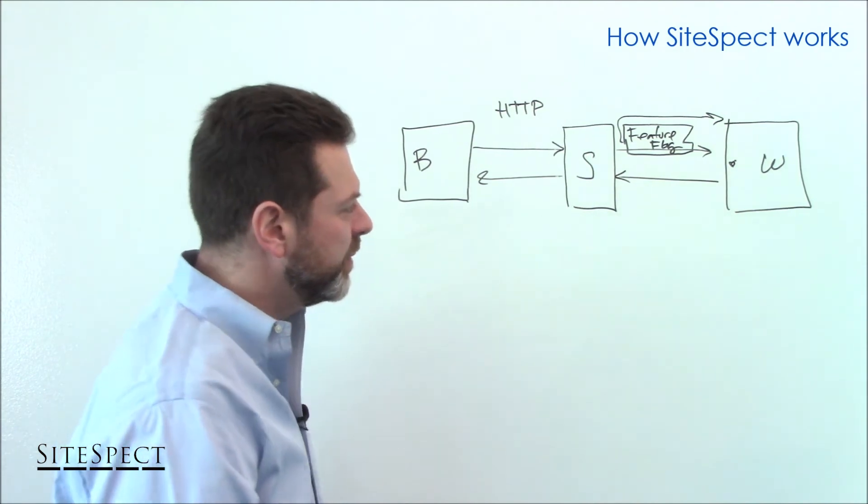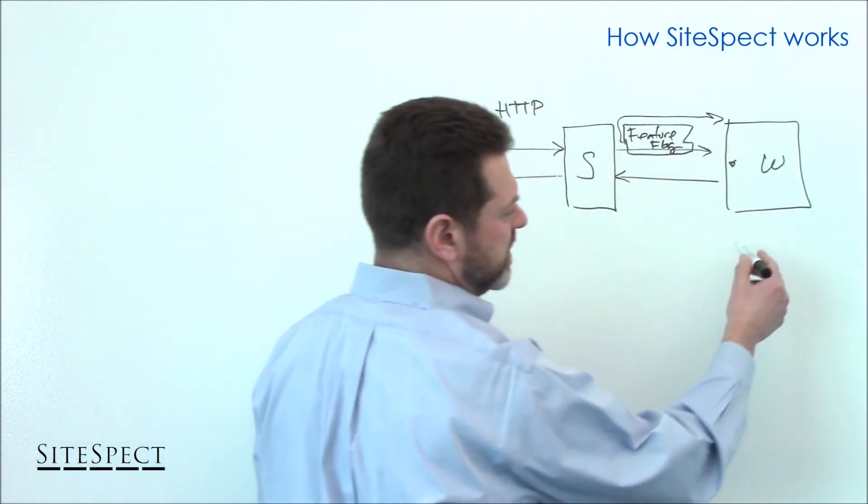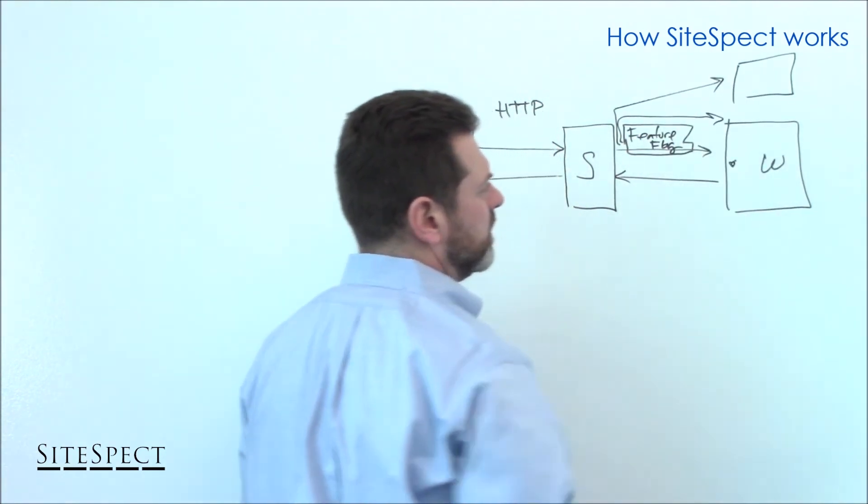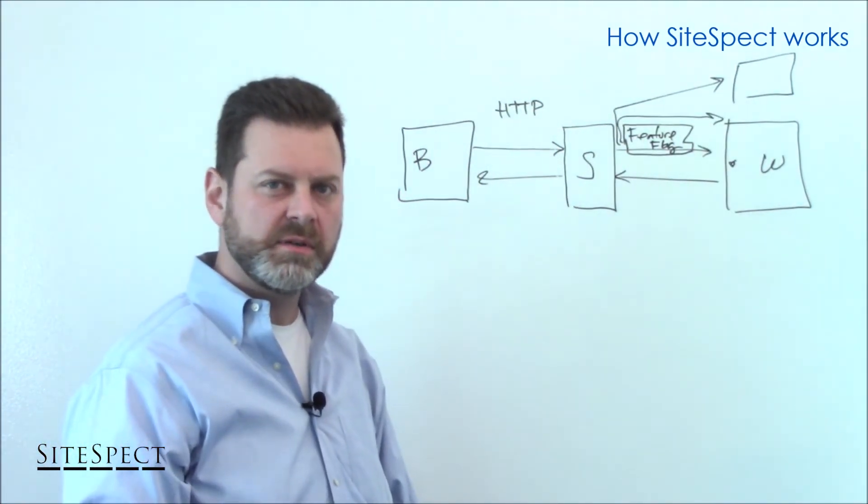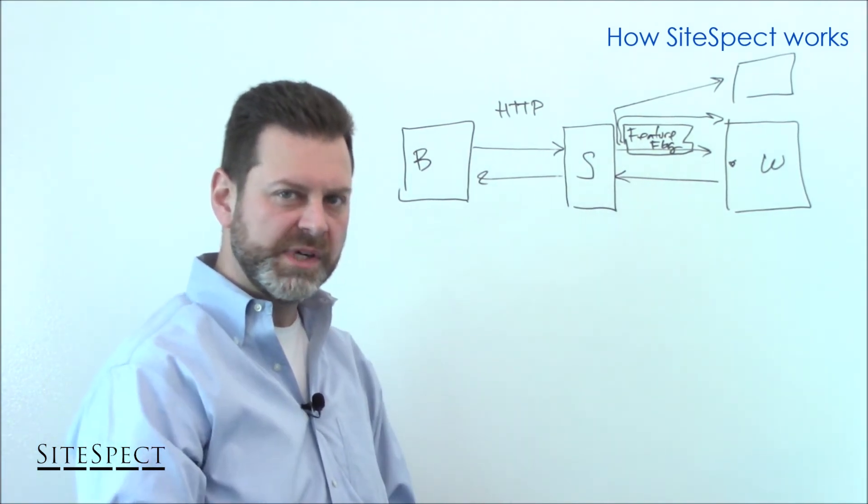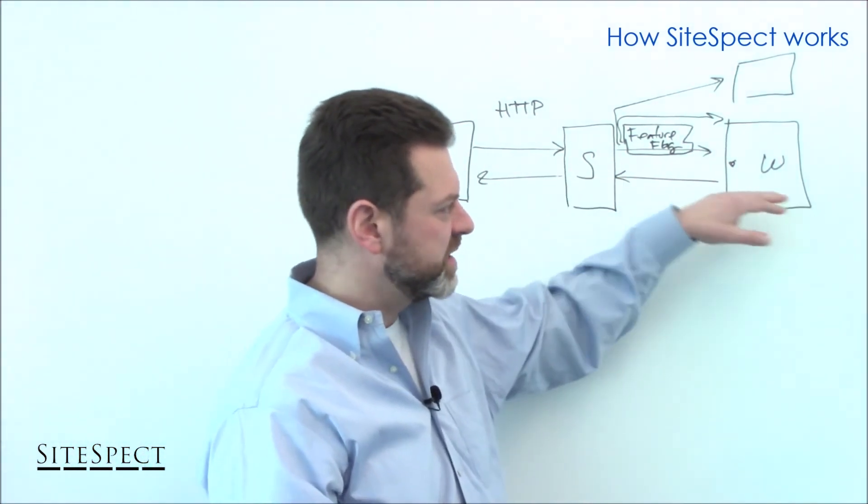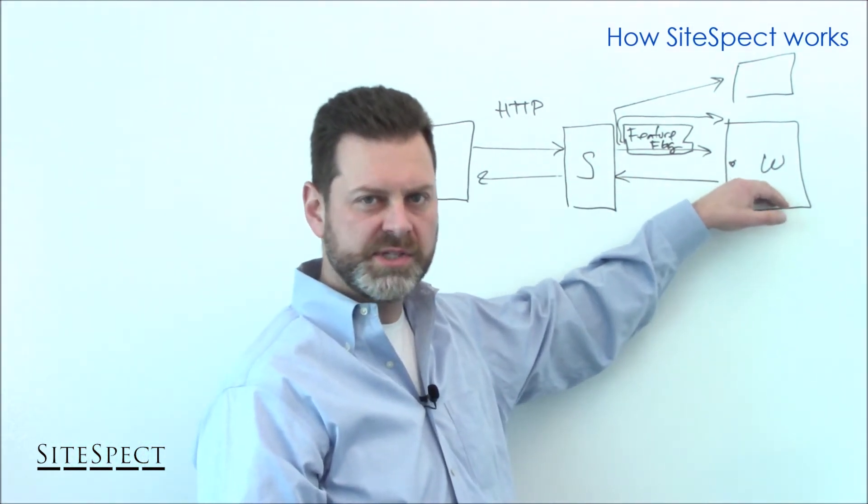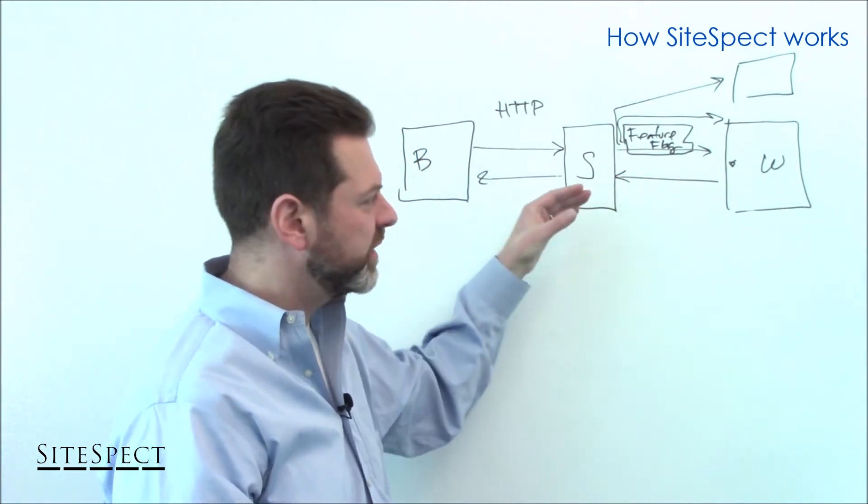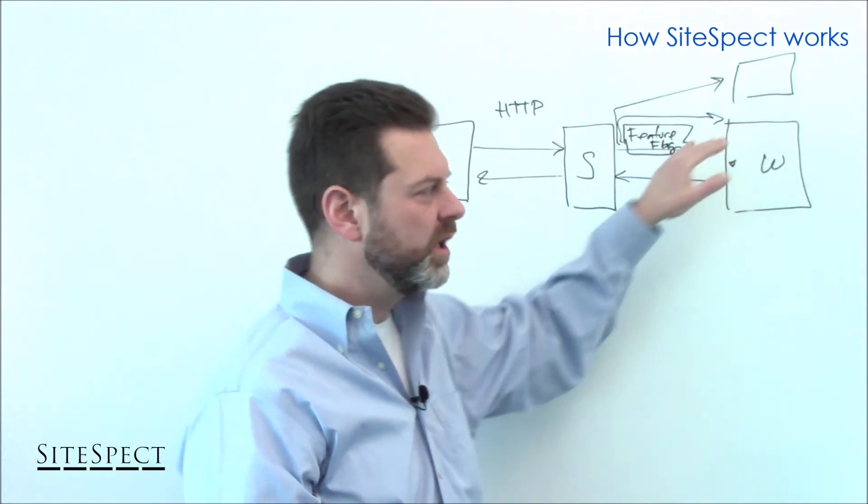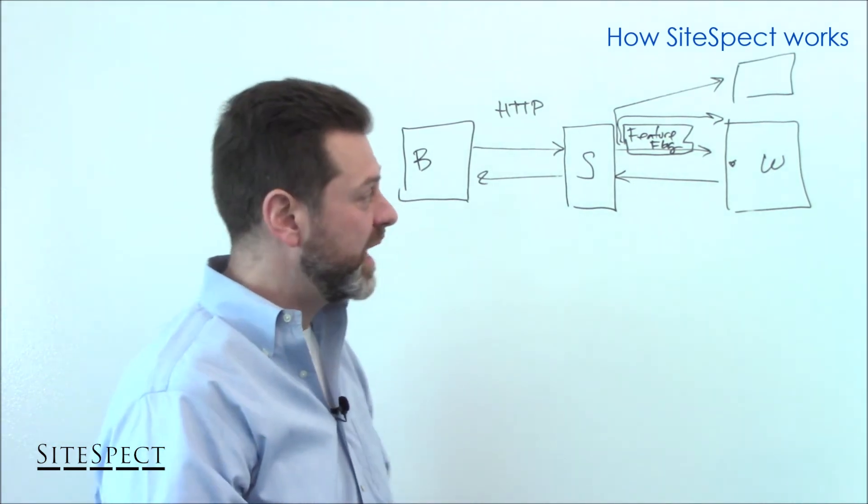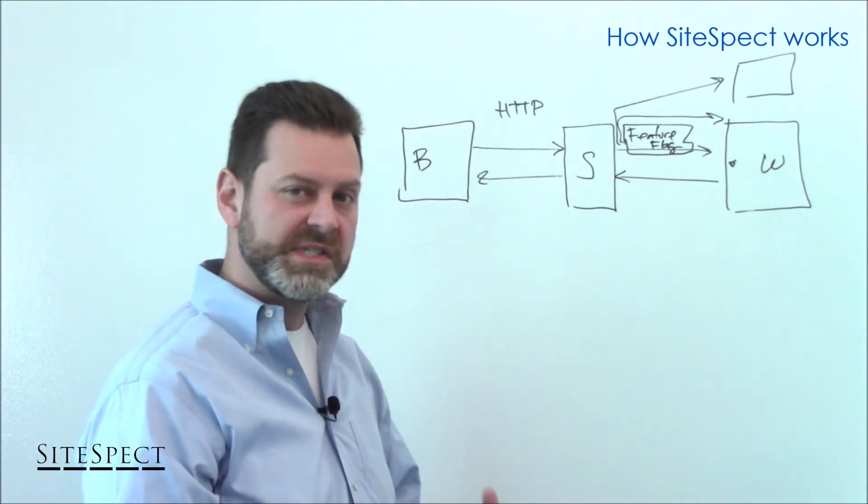And finally, there is also the ability to proxy to entirely alternate origin servers. And this could be done for release purposes, continuous deployment. Maybe you've got a blue-green release that's going on where most traffic is being sent to the current prod server. Let's say that's the blue pool. And you want to take off a percentage of traffic and selectively route it into the green pool. That is another option you have that, of course, leverages the proxy and enables you to do that in a very simple and powerful way.